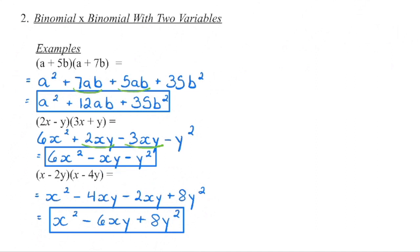Similarly on the last one: we get x squared, then minus 4xy minus 2xy — those combine to give minus 6xy — and then negative 2y times negative 4y becomes positive 8y squared.